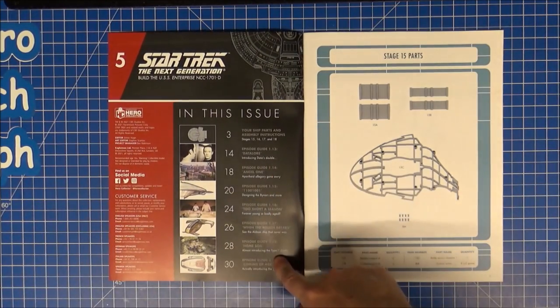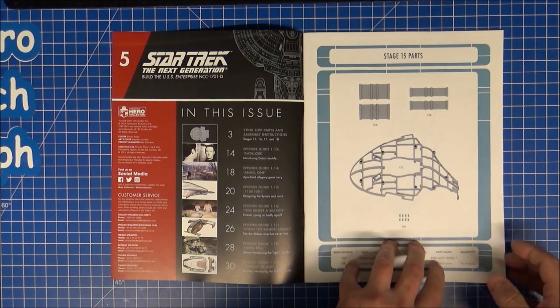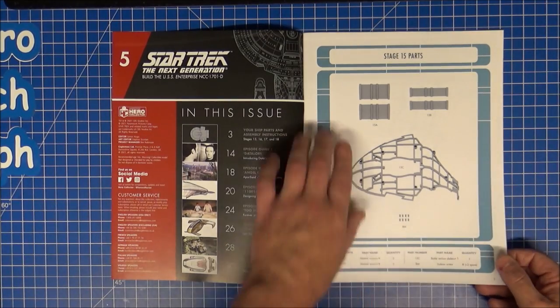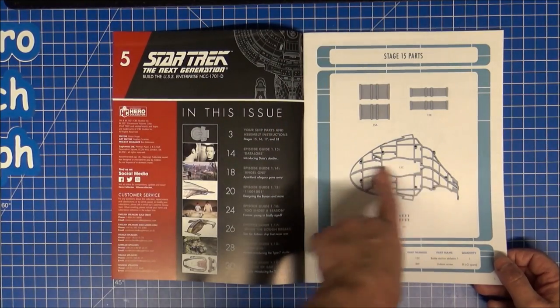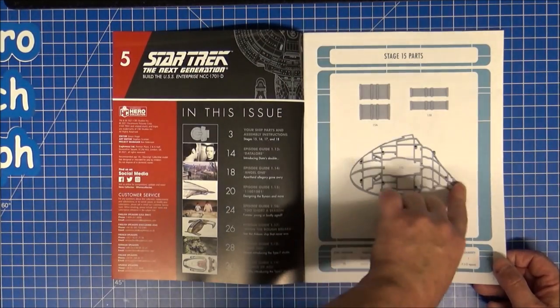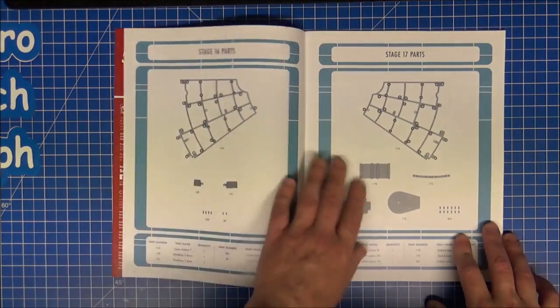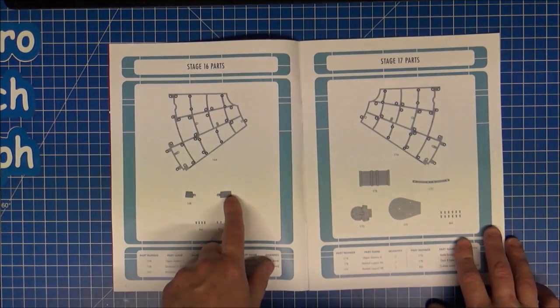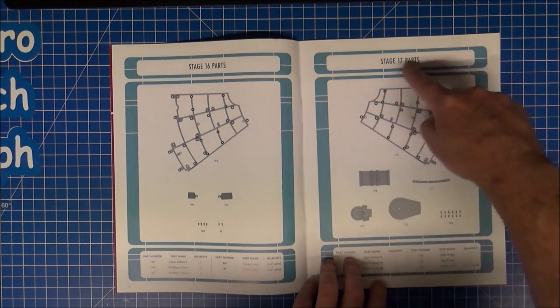It's still going through the episodes, so we've still got series one. I'll just show you how far we're going to be in this. Looks like we've got some more supports for the saucer section and the back. Looks like the battle bridge and the back of the neck supports.